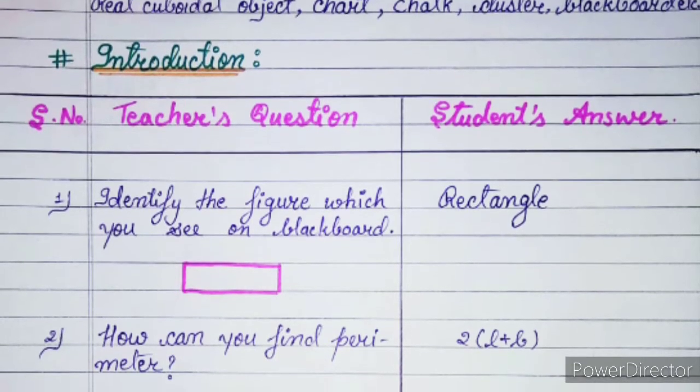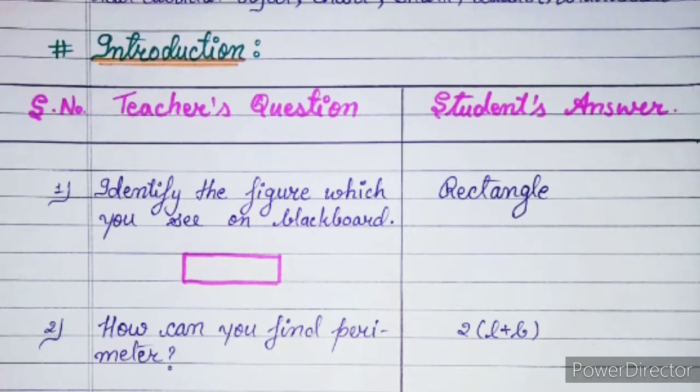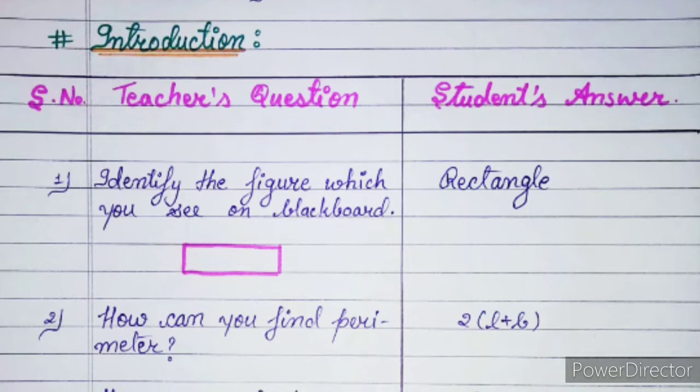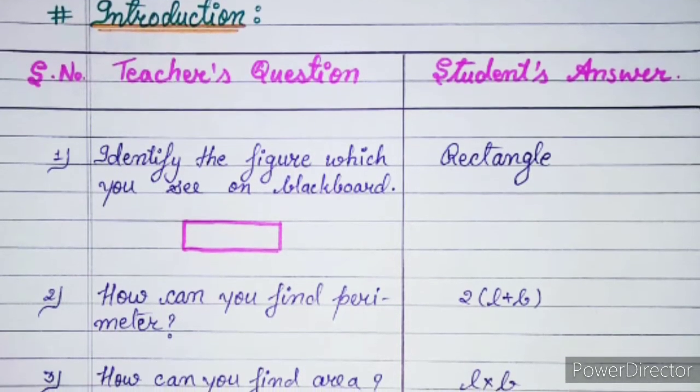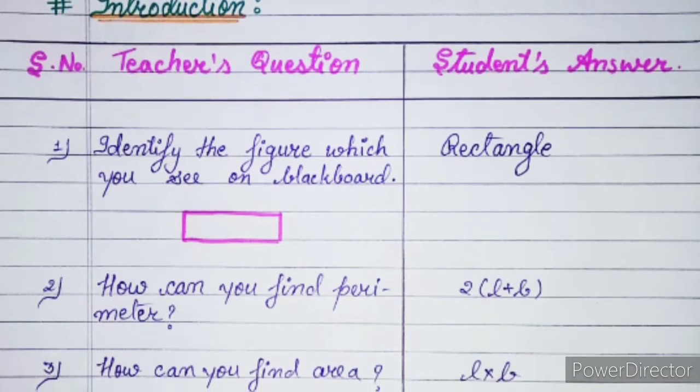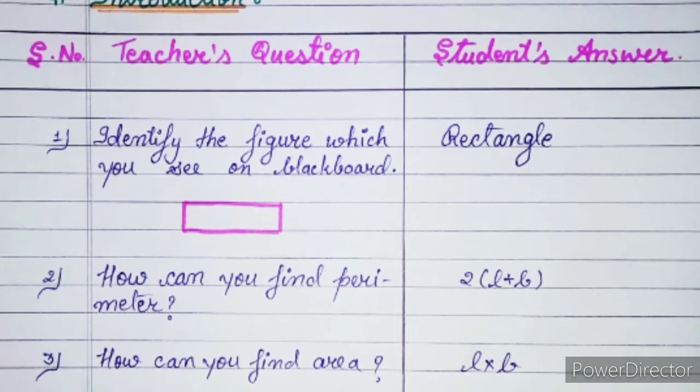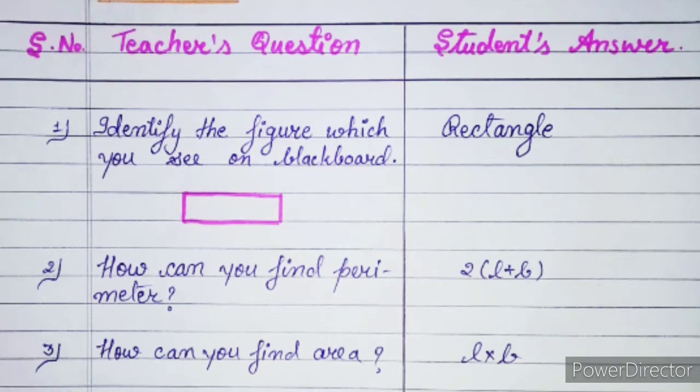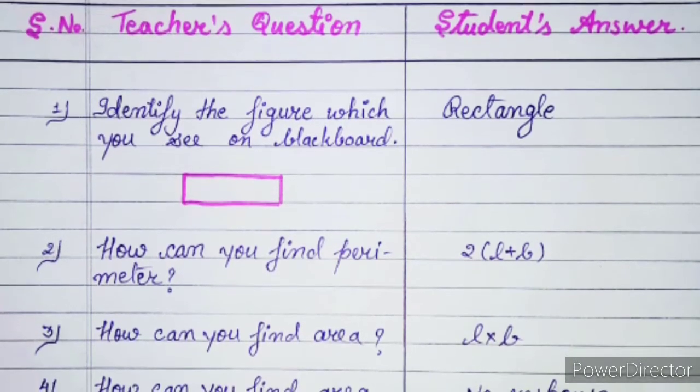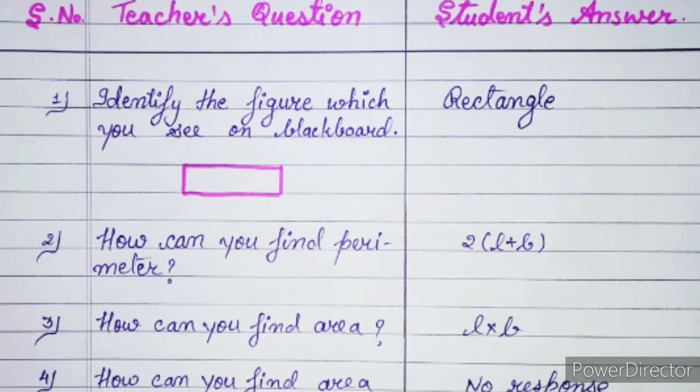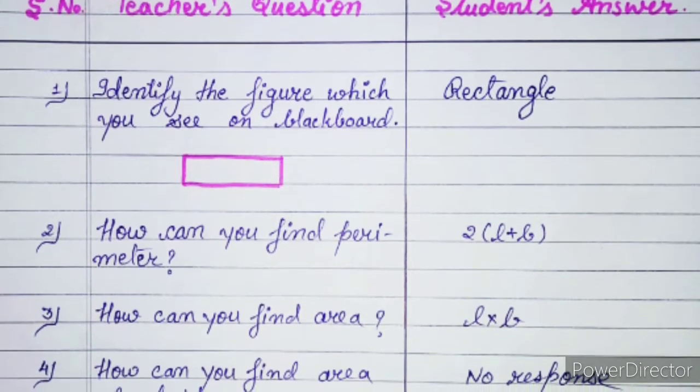After that, the Introduction Part comes. In the Introduction, the Teacher questions students from their previous knowledge. Like we can show the Triangle or Rectangle on the board. Because it is our Cuboid, we will show the Rectangle. And we will ask them what shape is it. Because they have already studied 2D shapes, they will tell us that it is a Rectangle. Then we can ask them about its Perimeter and its Area.